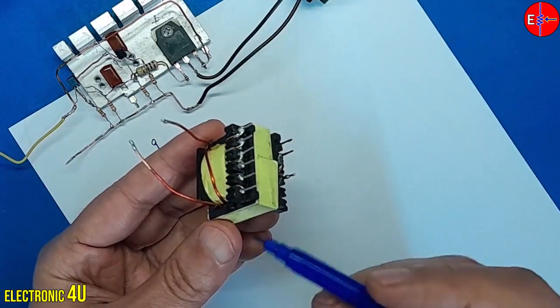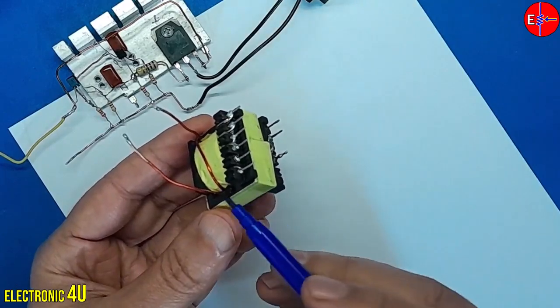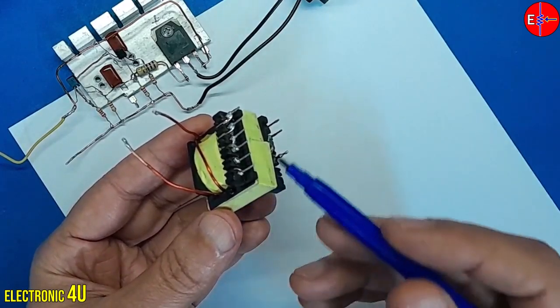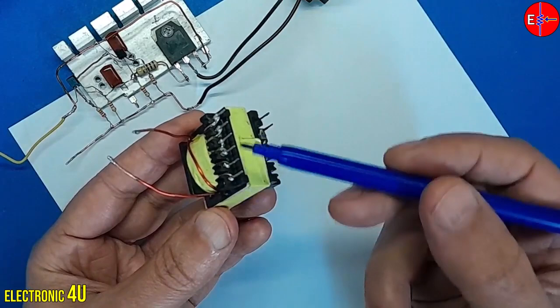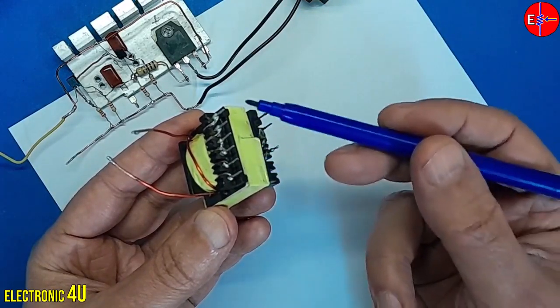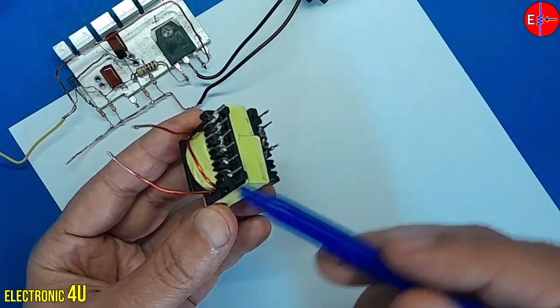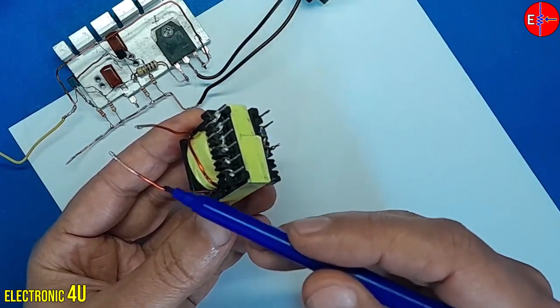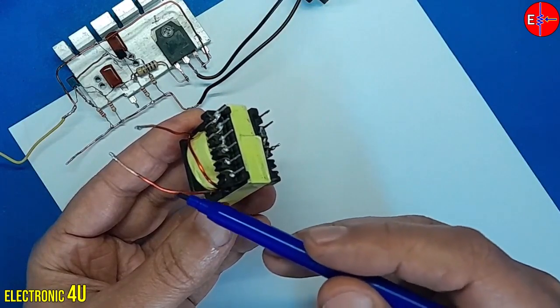As you are aware, a transformer can house multiple windings, commonly referred to as coils. This coil can have two or three terminals, serving as the transformer outputs. The wire I have placed here serves as an illustrative example.